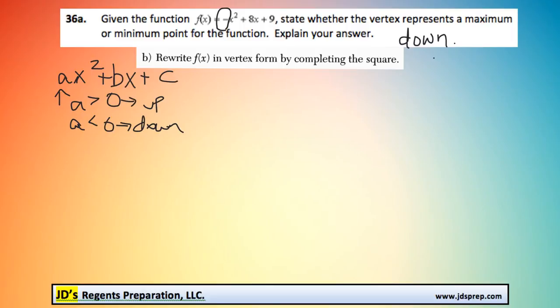And as an explanation, you could simply say that's because the value of a is negative. Now, part b, we need to rewrite f(x) in vertex form by completing the square.